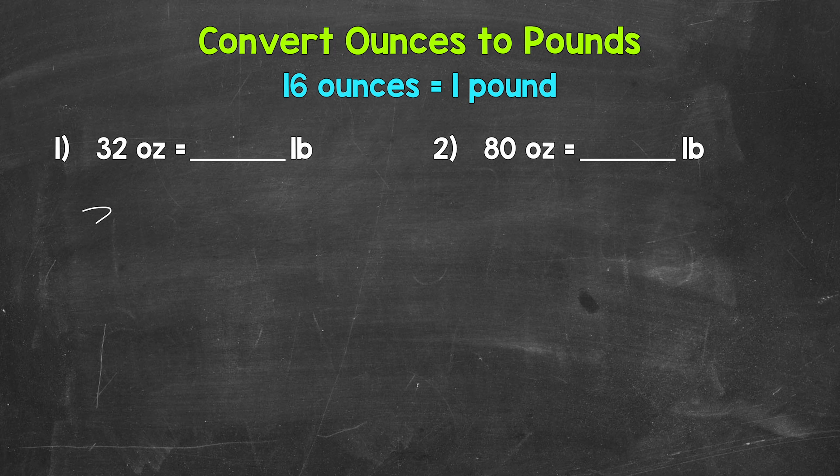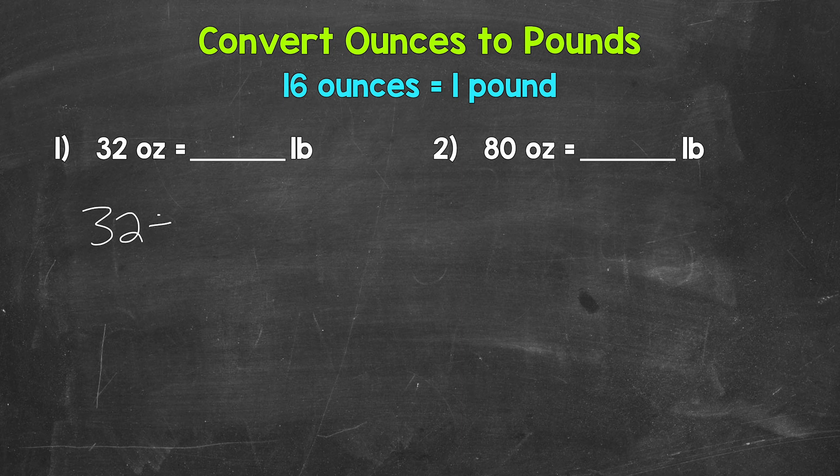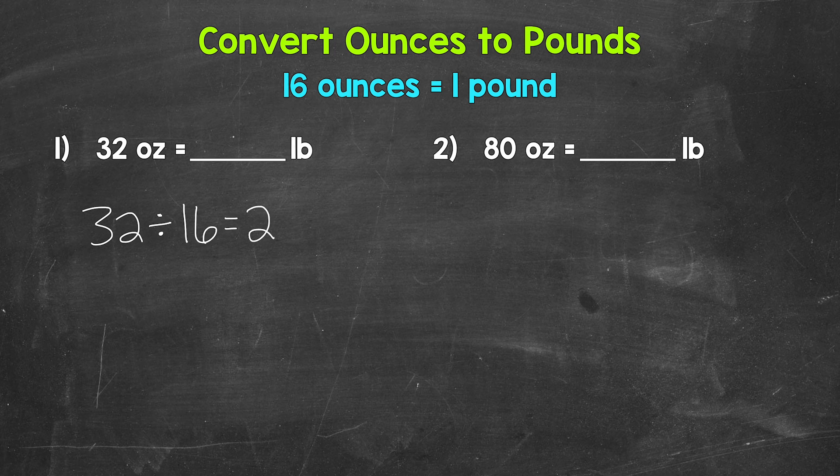So we need to do 32 divided by 16. 32 divided by 16 gives us two. 32 ounces equals two pounds. When we go from ounces to pounds, we divide by 16.